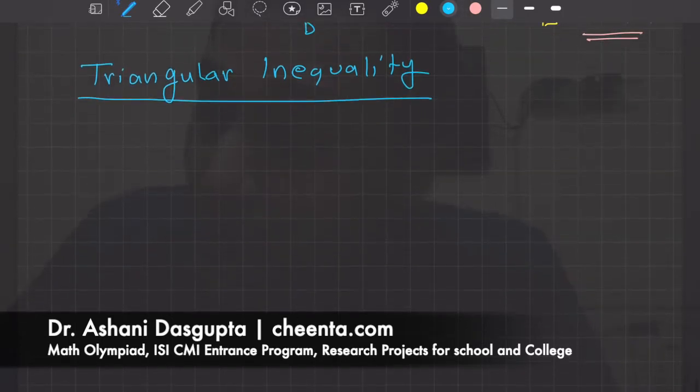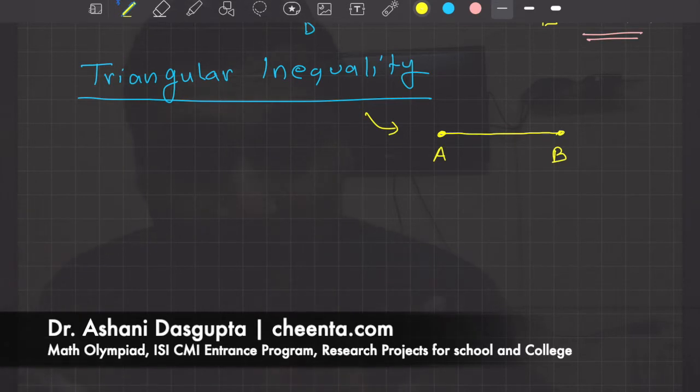If you have not seen triangular inequality, it is simply the fact that the distance between two points is shortest when you go straight from one point to another. When you go straight from point A to point B, that is the shortest distance.